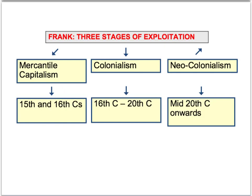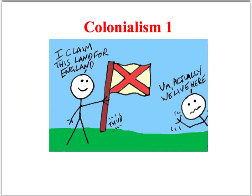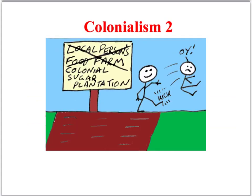The second stage of exploitation that Frank identifies is colonialism, covering roughly the 16th century to the early part of the 20th century. Colonialism formalised the exploitative relationships established during the mercantile capitalism phase. It involved European countries establishing overseas territories in the southern hemisphere, so that large parts of the Americas, Asia, and Africa eventually became part of a bigger European empire. Colonialism had a massive impact on political systems, cultural systems, and the economy.